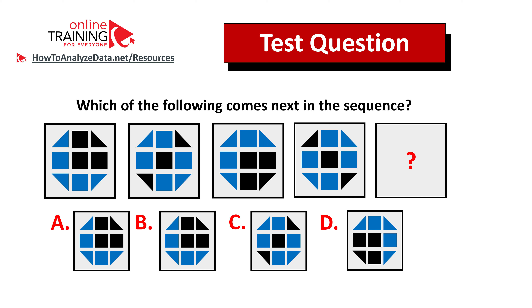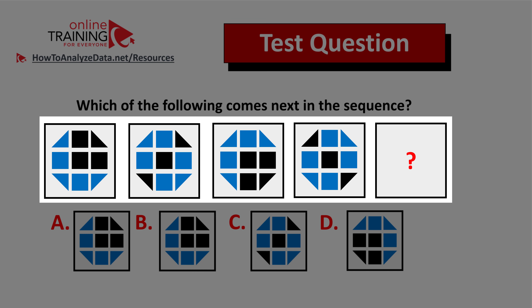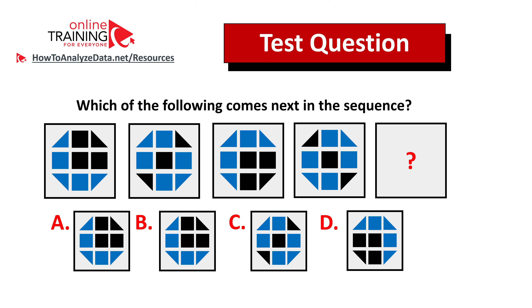Let me share with you a tricky question from the real test. I have confidence you will figure out the answer, especially if you look closely for patterns. Which of the following comes next in the sequence? You're presented with a sequence of four squares and the fifth one is missing. There are four possible choices: A, B, C, and D. All choices look very similar. Pause the video and give yourself 10 to 20 seconds to see if you can come up with the answer.